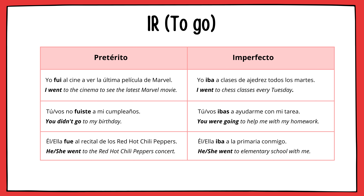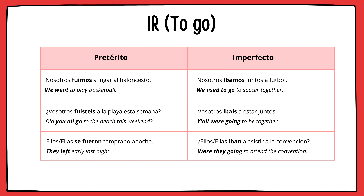Él o ella iba a la primaria conmigo. Now the plural forms for ir — pretérito and imperfecto: Nosotros fuimos a jugar al baloncesto. Vosotros fuisteis a la playa esta semana. Ellos se fueron temprano anoche. Nosotros íbamos juntos al fútbol. Vosotros ibais a estar juntos. Ellos iban a asistir a la convención.